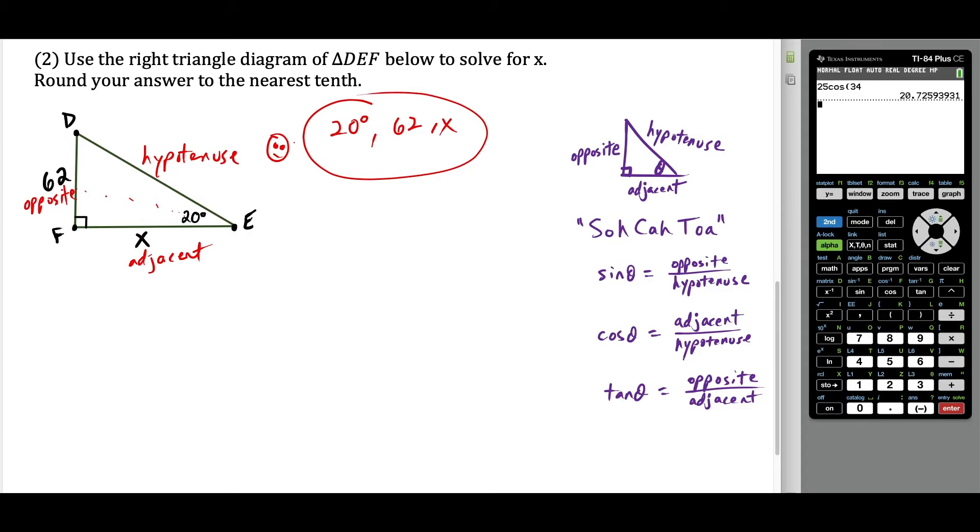So once again, we were given the opposite side. We want to find the adjacent side. So when I think about all these terms at once, I think, all right, which formula uses the opposite side and the adjacent side? And in this case, we're going to be using tangent.